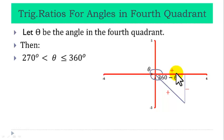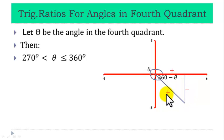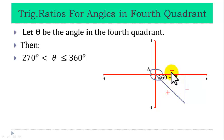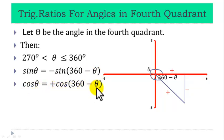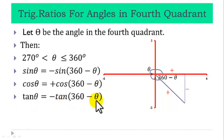So, finding the trig ratio for theta is equivalent to finding the trig ratio for 360 minus theta. Sine is negative in this quadrant: minus over plus. Cosine is positive: plus over plus. While tangent is negative: minus over plus. Therefore, sine theta equals minus sine of (360 minus theta). Cos theta equals plus cos of (360 minus theta). And tan theta equals minus tan of (360 minus theta). We observe that in the fourth quadrant, it is only cosine that is positive.